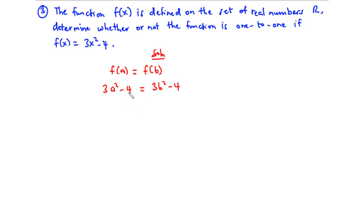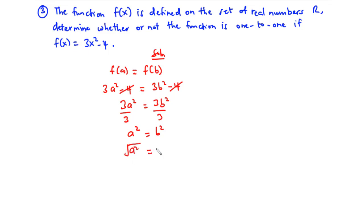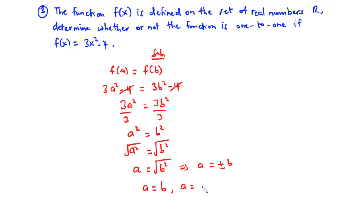Since we have negative 4 on both sides, we cancel it, leaving 3a² = 3b². Dividing through by 3 gives a² = b². Taking the square root of both sides gives a = ±b, meaning a = b or a = −b.